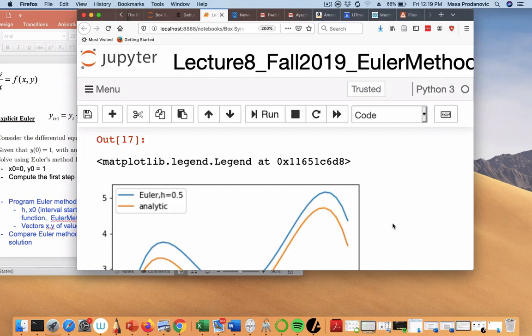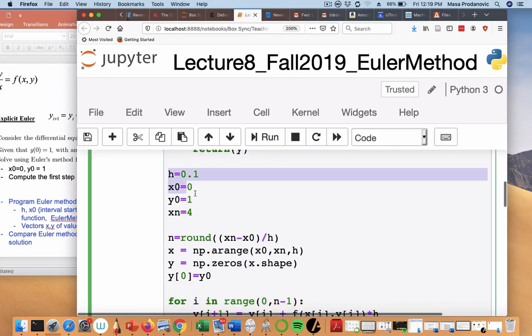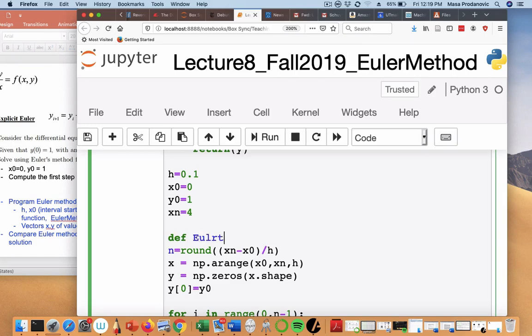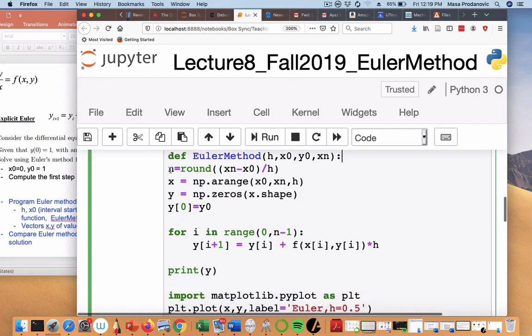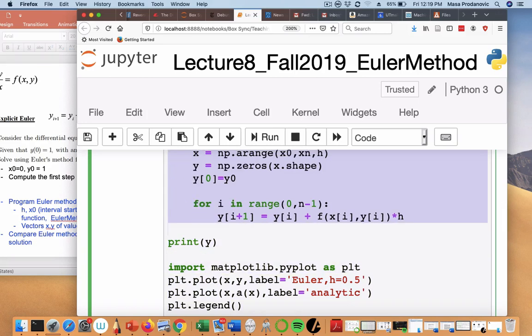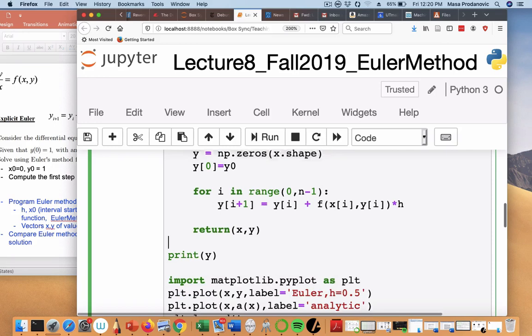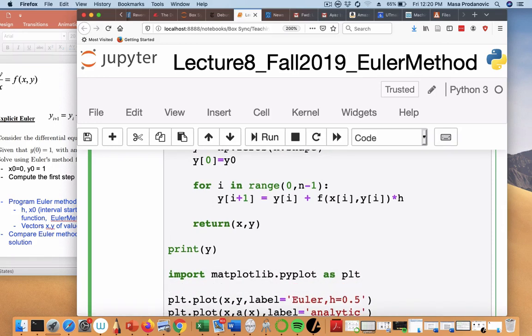Now, I want to play with this. So, it's a very good idea to make this a function. So I'm just going to define Euler method of all of these inputs that I have up here. h, x0, y0, xn. I'm going to indent all of this. And I'm not going to plot this part of the function. And I'm going to return x and y.